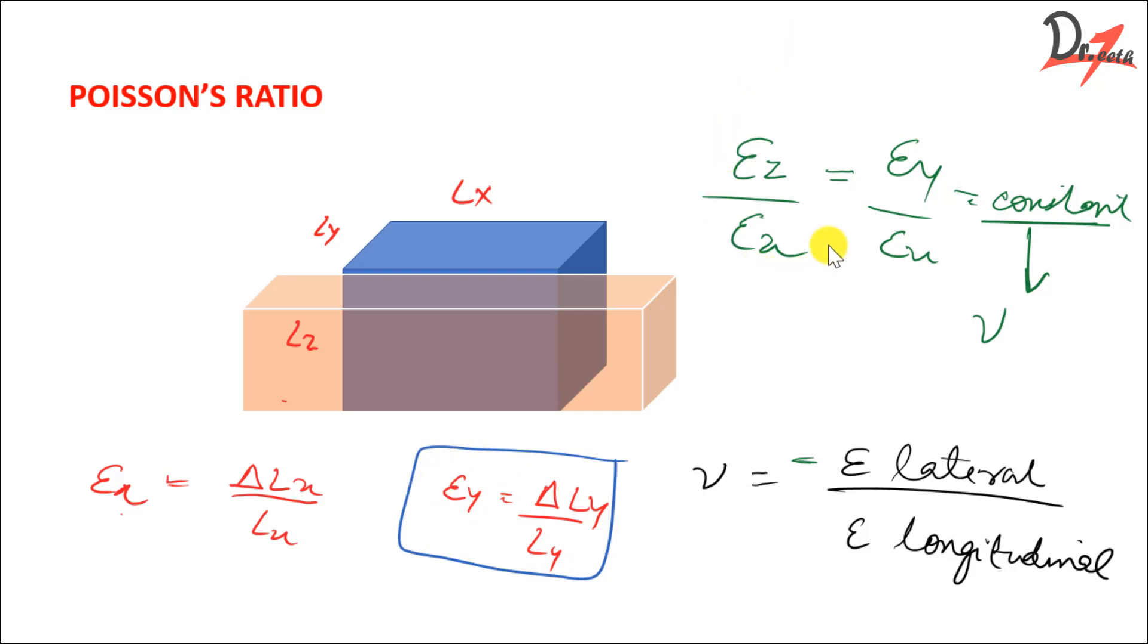It was found that the strain in the y-axis was equal to the strain in the z-axis and it was proportional to this. So when we take out this ratio - we divide the strain in the z-axis with that of the x-axis - that will be equal to the strain in the y-axis divided by the x-axis. And that will be a constant which is the Poisson's ratio denoted by a Greek letter nu.